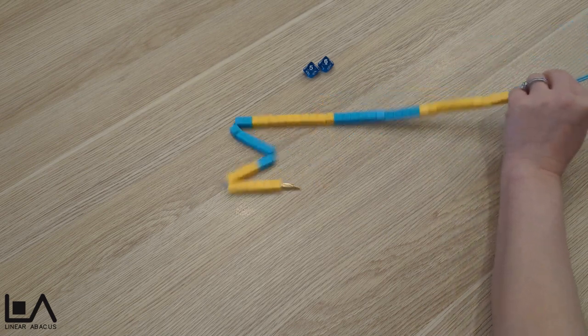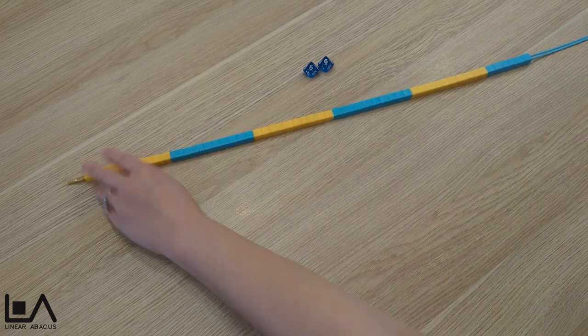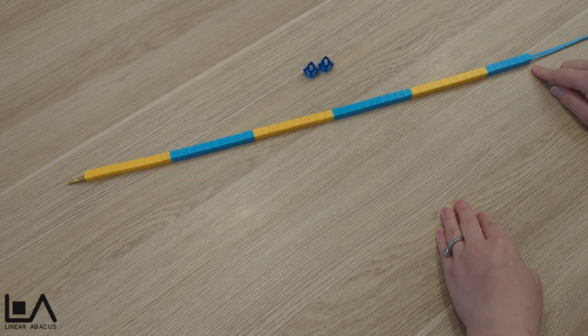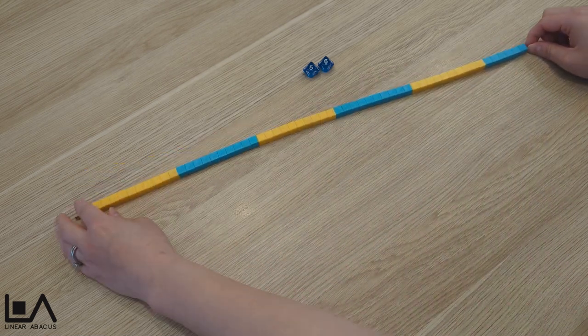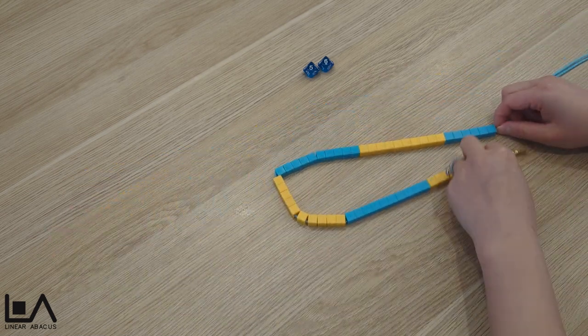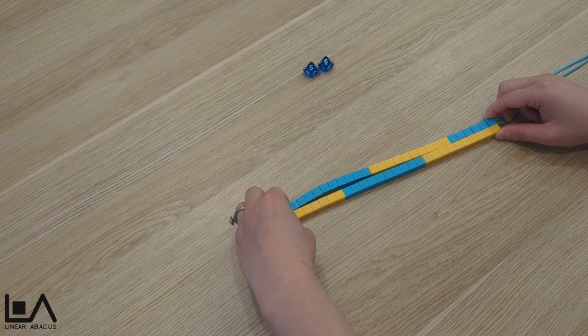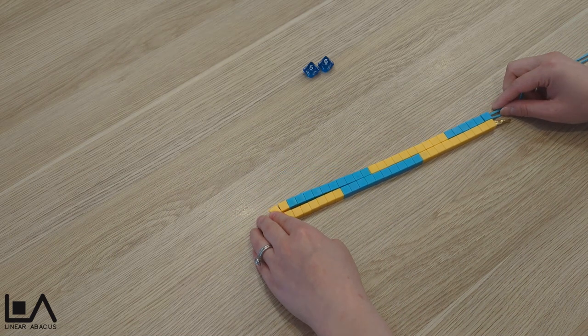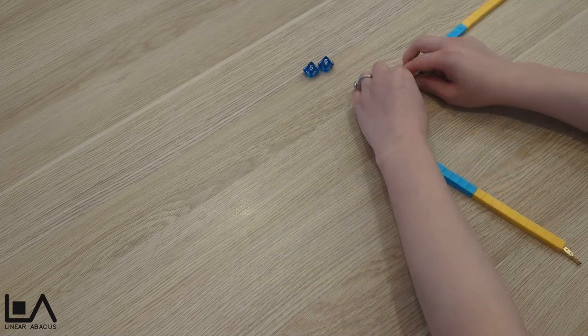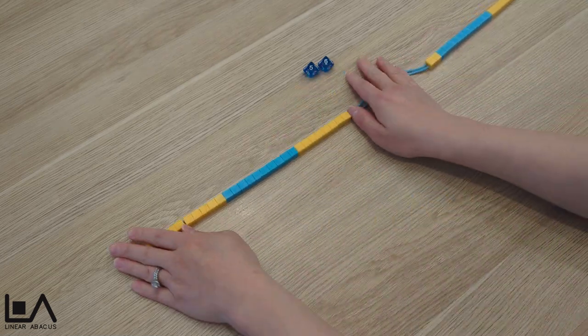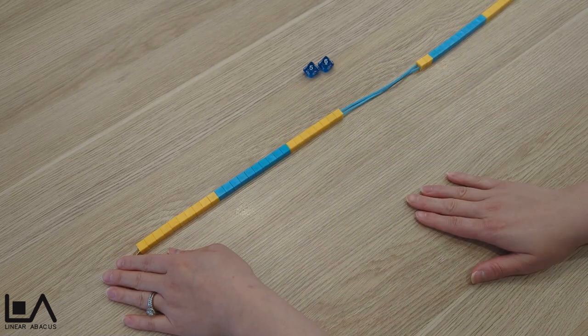Now we'll look at how we can use partitive division to fold the abacus string into 2 equal groups. Here I'm putting bead number 1 next to bead 56, and I'm looking for the midpoint. This will help me find which number, when doubled, makes 56. I can see that 56 can be partitioned into 2 groups of 28.